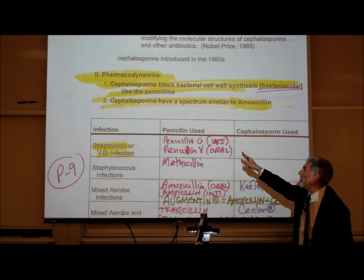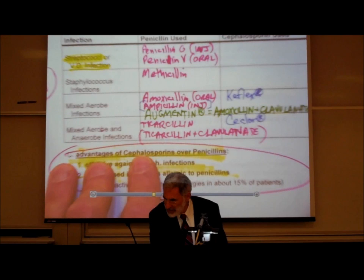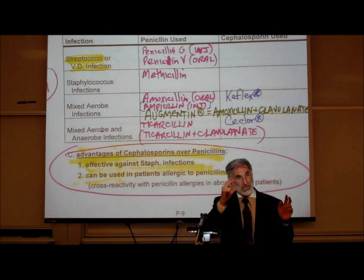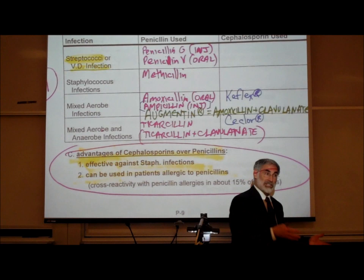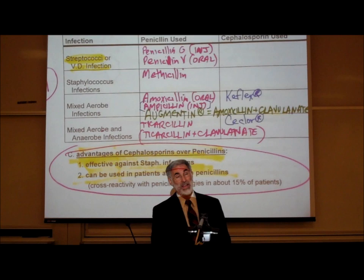Cephalosporins have a spectrum of action similar to that of amoxicillin. An example is Keflex. Most cephalosporins — their generic and brand names — either begin with the letter C or K. Keflex has a spectrum of action similar to amoxicillin. It works like penicillin and is bactericidal like penicillin. There are two advantages of using cephalosporin over penicillin.